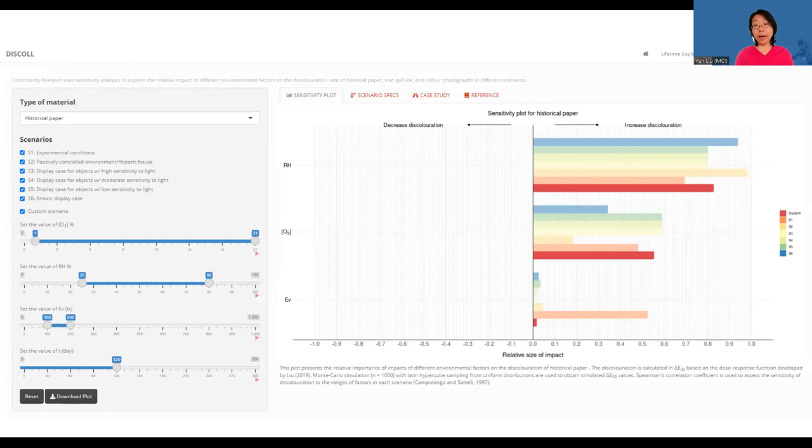A bar on the right side means the factor would increase the discoloration, and the bar on the left means that the factor would decrease the discoloration. For both directions, the longer the bar, the more impact the factor has on the variation of the discoloration.